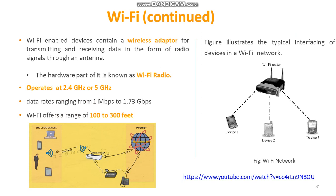Wi-Fi enabled devices contain an adapter for transmitting and receiving data, and the hardware part is known as a Wi-Fi radio. It operates at 2.4 gigahertz or 5 gigahertz, with data rates ranging from 1 megabit per second to 1.73 gigabits per second, and a distance of about 100 to 300 feet. The diagram shows the typical interfacing of a Wi-Fi network along with its devices, using a Wi-Fi router.